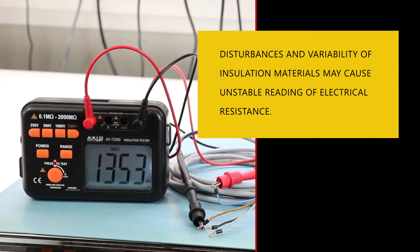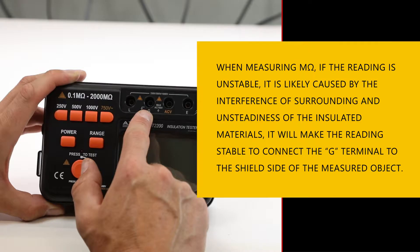Disturbances and variability of insulation materials may cause unstable reading of electrical resistance. In order to receive a stable reading, connect the G socket to the screen of the measured circuit.